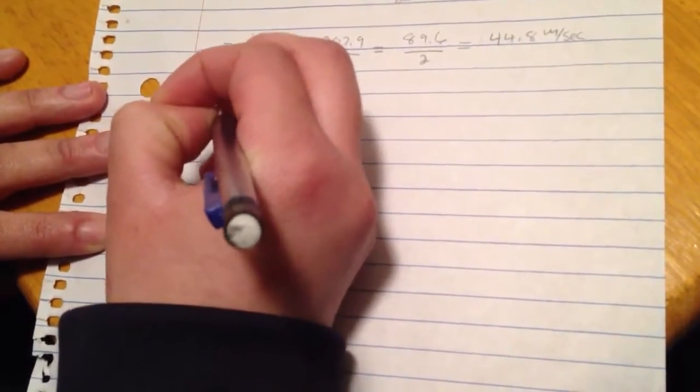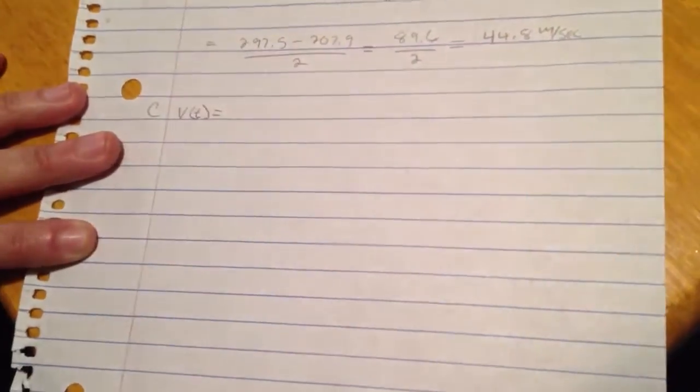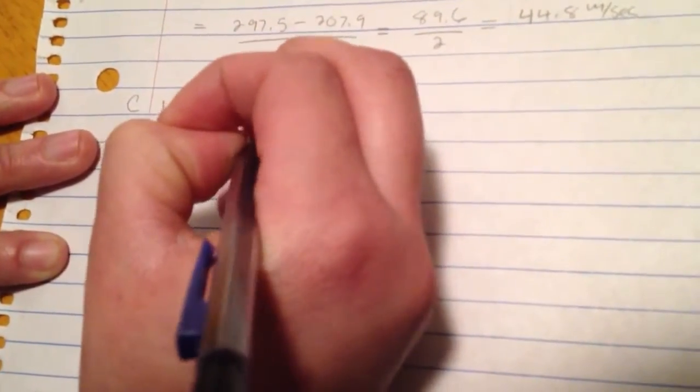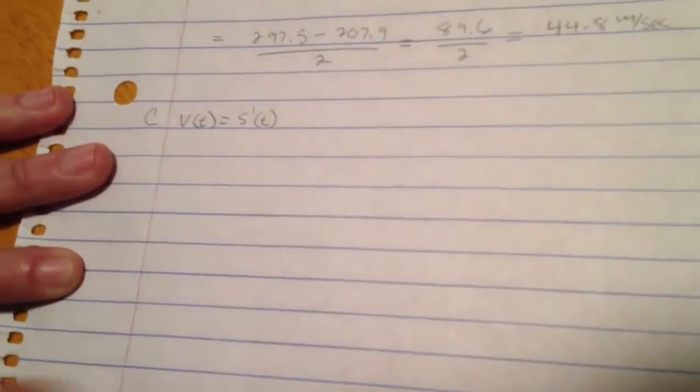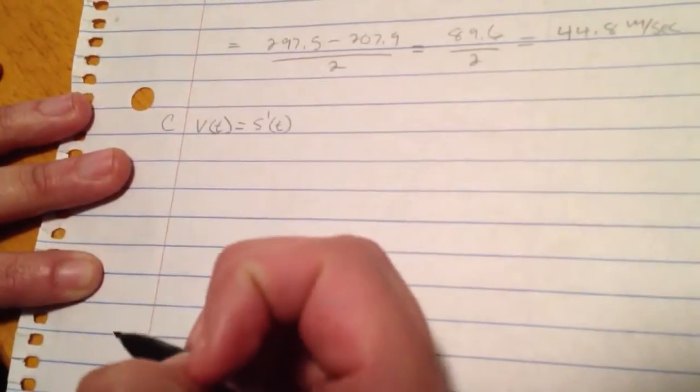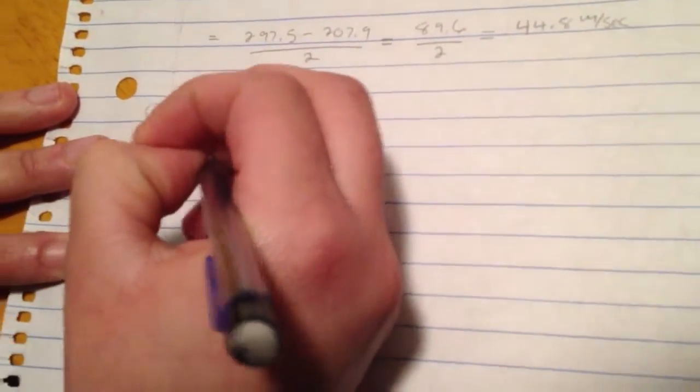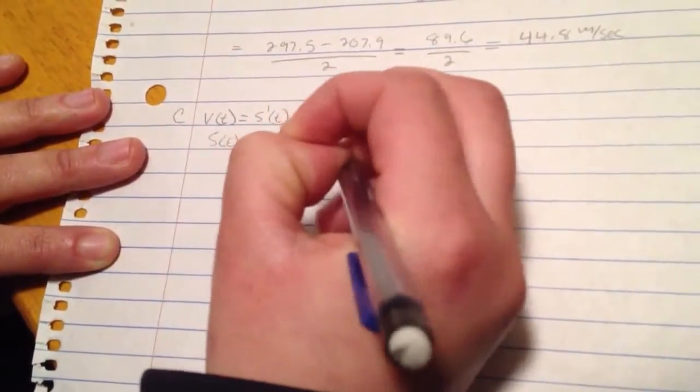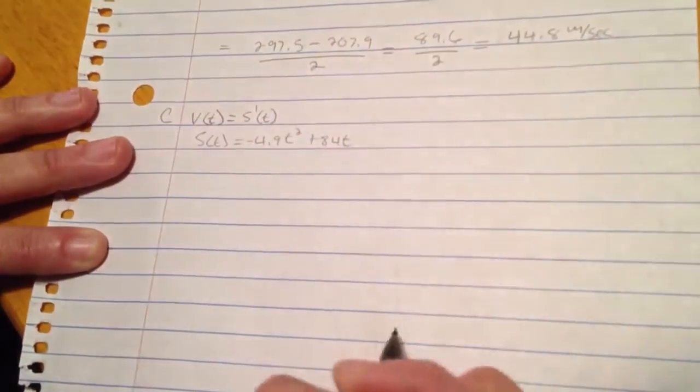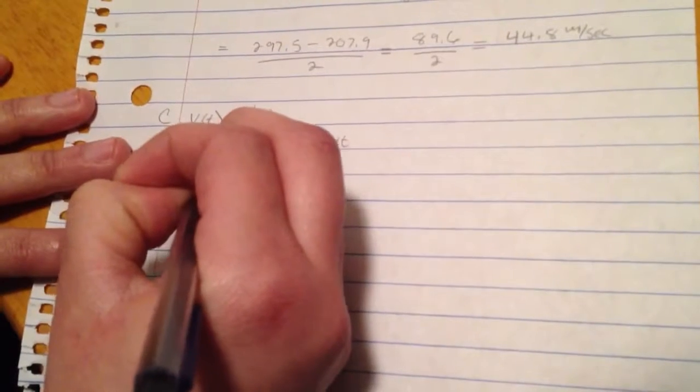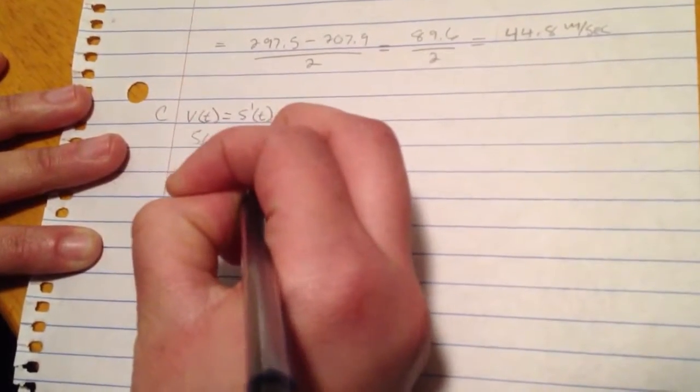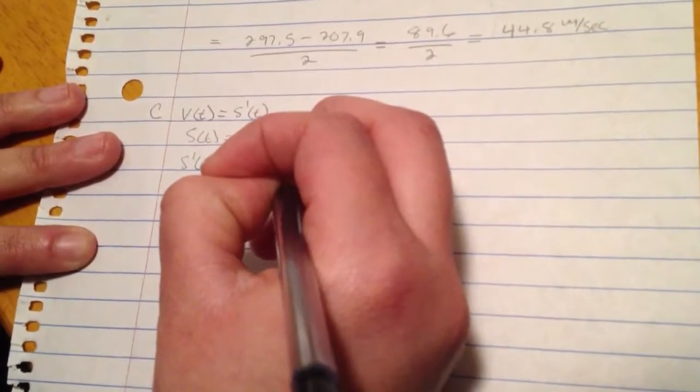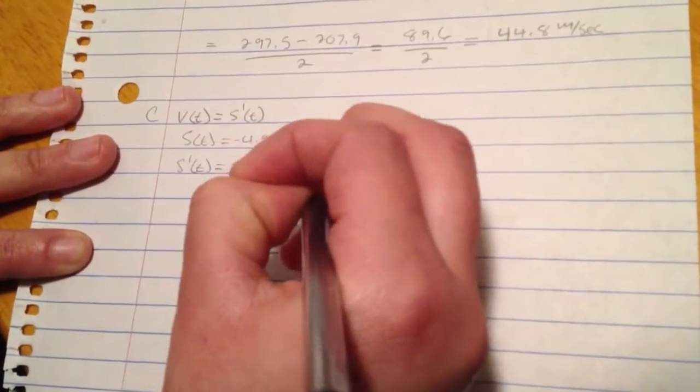Now velocity, or v(t), is equal to the derivative of s(t). So we know that s(t) is equal to negative 4.9 times t squared plus 84t. So the derivative of s(t) is equal to negative 9.8 times t plus 84.